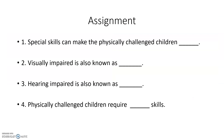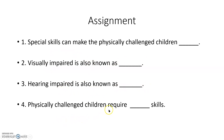I think all of you understand. A small assignment for you: Special skills can make the physically challenged children [blank]. Visually impaired is also known as [blank]. Hearing impaired is also known as [blank]. Physically challenged children require [blank] skills. Okay children, thank you.